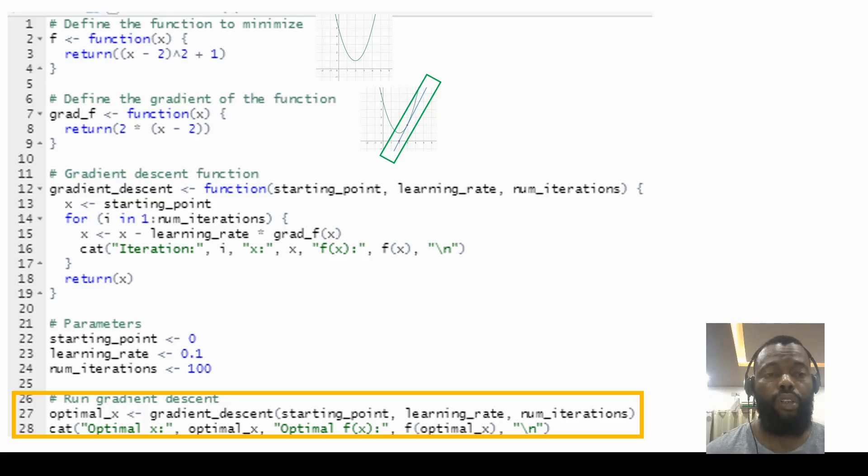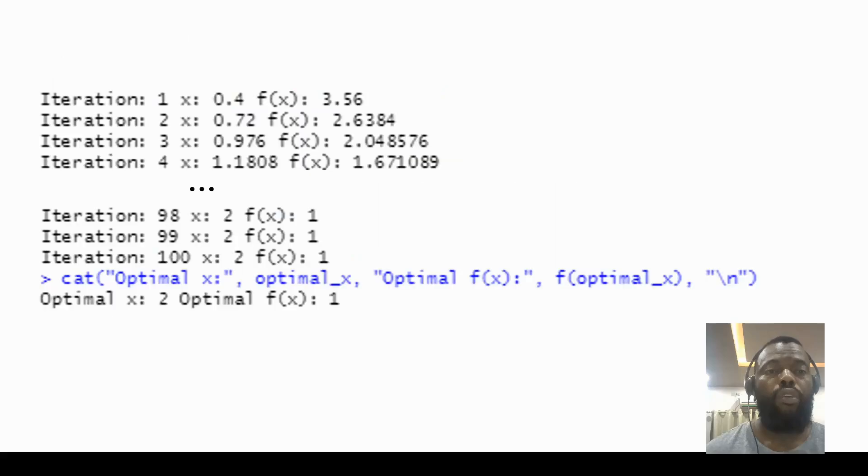From our gradient descent we can see the first four iterations and the last three iterations, and we see here the optimal value for x is 2 and the optimal value for y is 1.